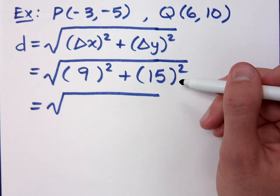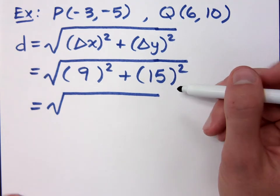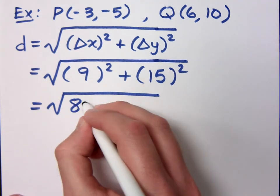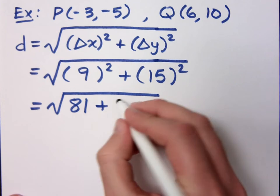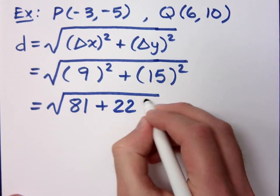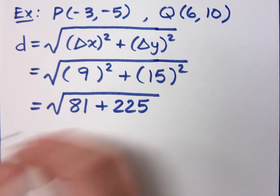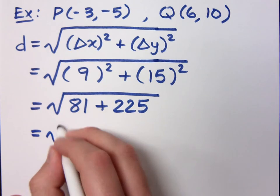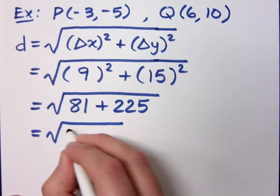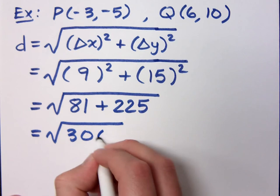What's 9 squared? 81. What's 15 squared? 225. So when I combine these, I have what? 306. Okay, so I've got to factor this.